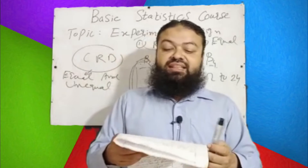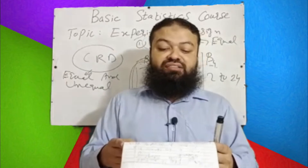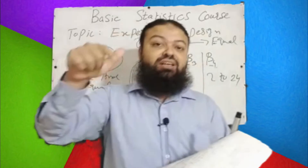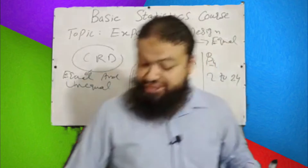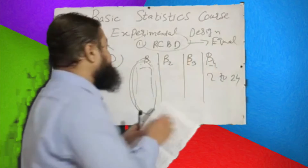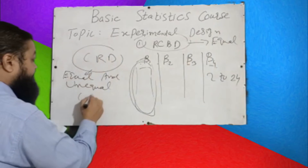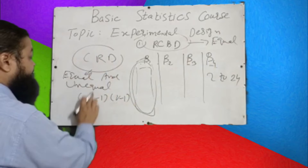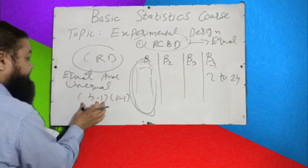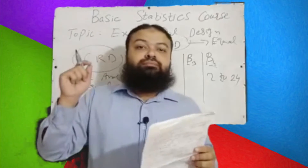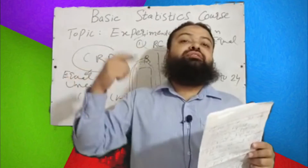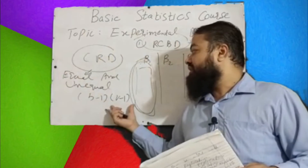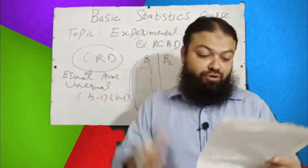Question number nine: In the analysis of data of RCBD with b blocks and v treatments — a very important concept. The degree of freedom for error is (b − 1)(v − 1). If there are b blocks and v treatments, then the degree of freedom for error will be (b − 1)(v − 1). A very important one.